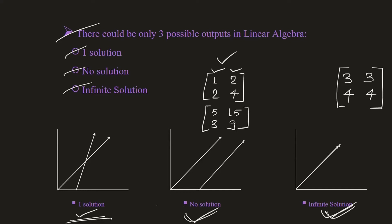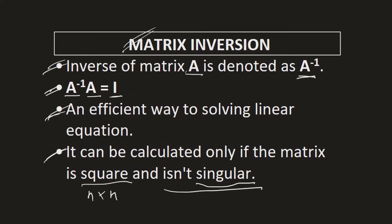For these two types of cases — no solution and infinite solutions — you will not be able to calculate the inverse of a matrix. So, the inverse can be calculated only if the matrix is square and non-singular. We have now understood under what circumstances we will be able to calculate the inverse of a matrix.